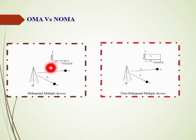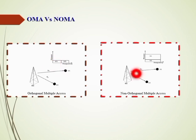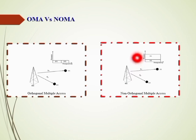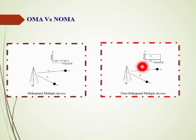In OMA, the frequency is divided between users — user 1 is given the lower frequency range and user 2 is given the higher frequency range, but the power is the same for both. In NOMA, the same channel coefficients H1 and H2 apply for user 1 and user 2 respectively, but in the power domain you can see that the power levels are different while the frequency band is the same for both users. More power is allocated to user 1 and less power to user 2 in NOMA — each user is differentiated by a different power level.